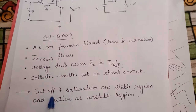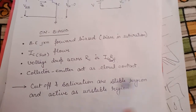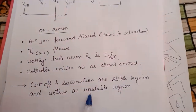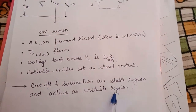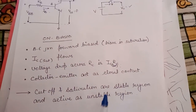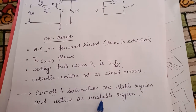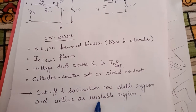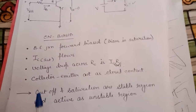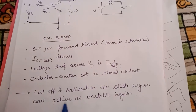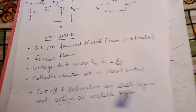The cutoff and saturation regions are stable regions, while the active region is an unstable region for switching. Therefore, we must operate our transistor only in the saturation region and the cutoff region, bypassing the active region.